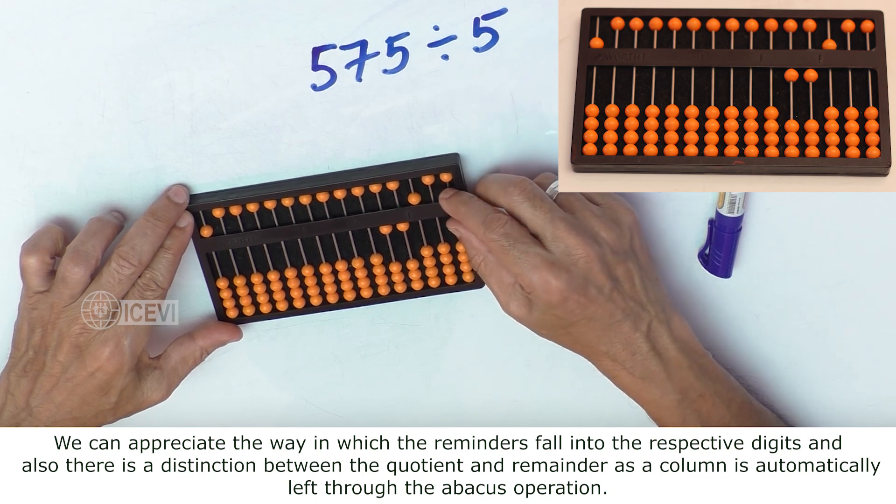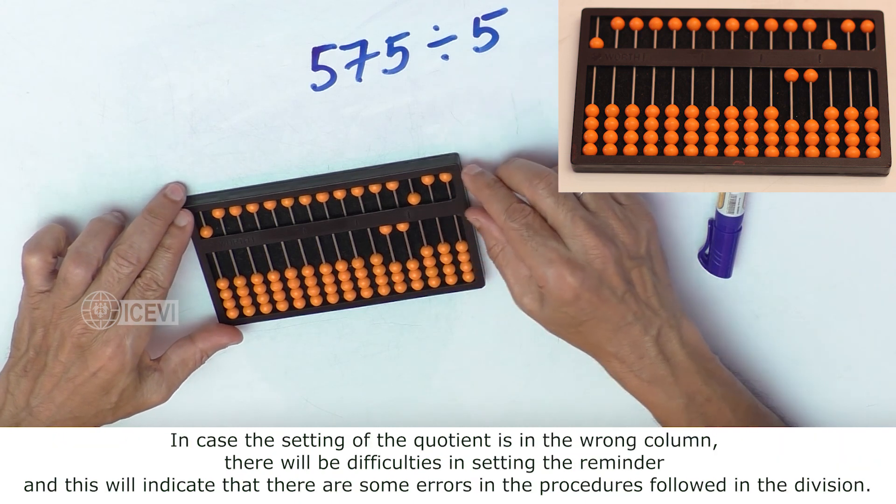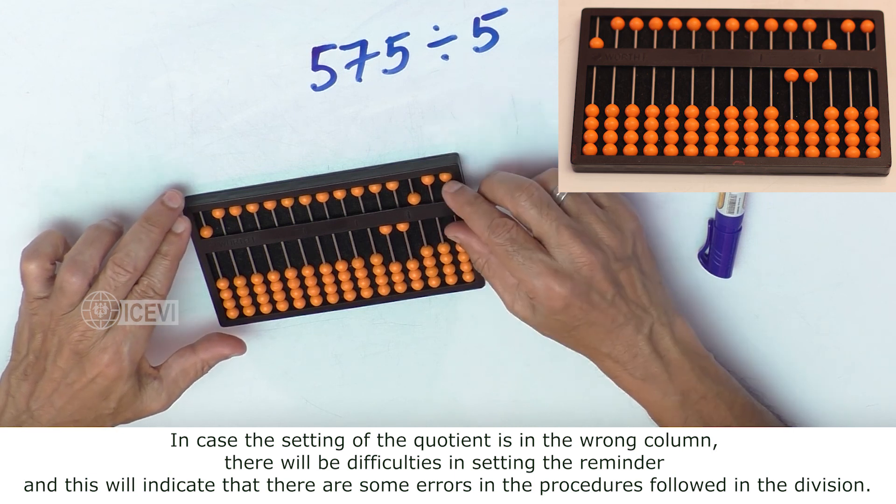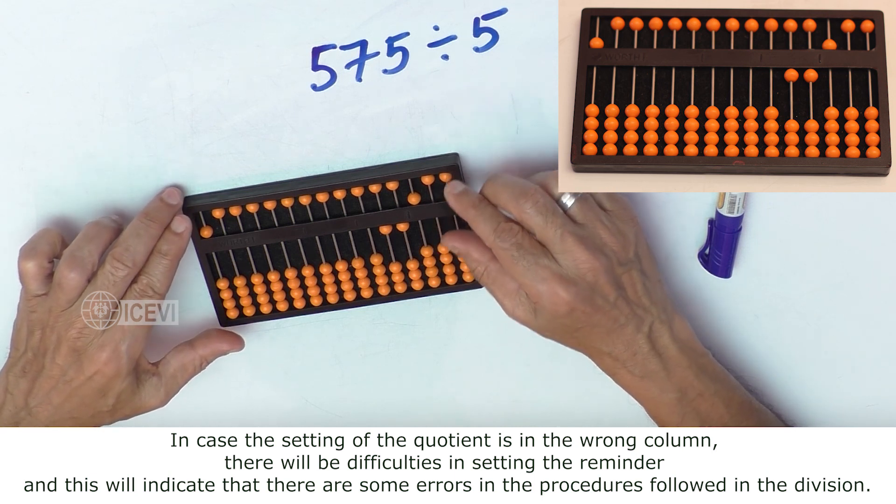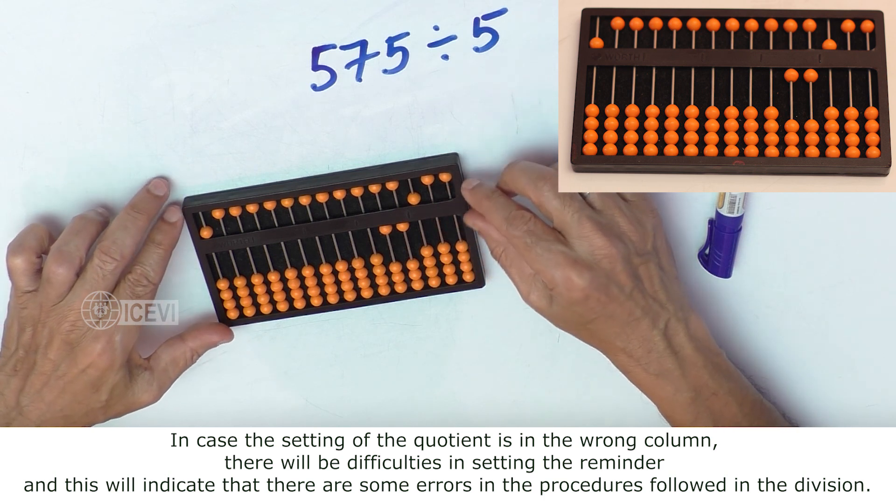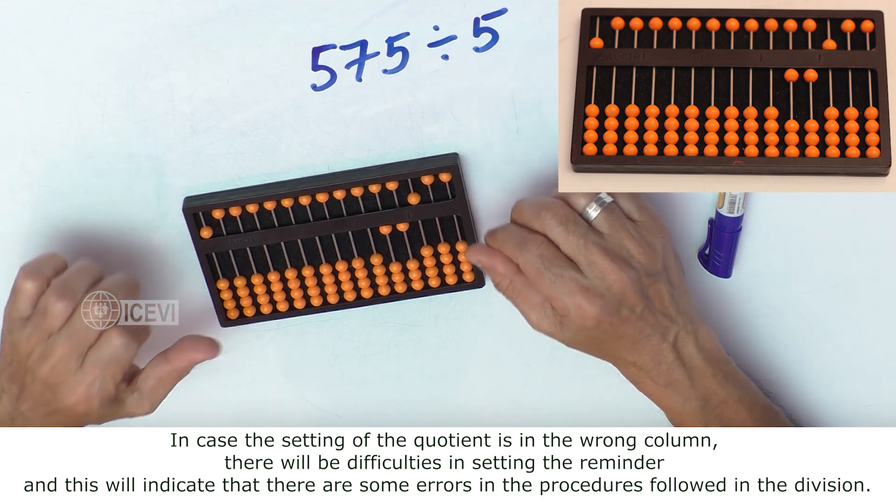We can appreciate the way in which the remainders fall into the respective digits and also there is a distinction between the quotient and the remainder as a column is automatically left through the Abacus operation. In case setting of the quotient is in the wrong column, there will be difficulties in setting the remainder and this will indicate that there are some errors in the procedures followed in the division.